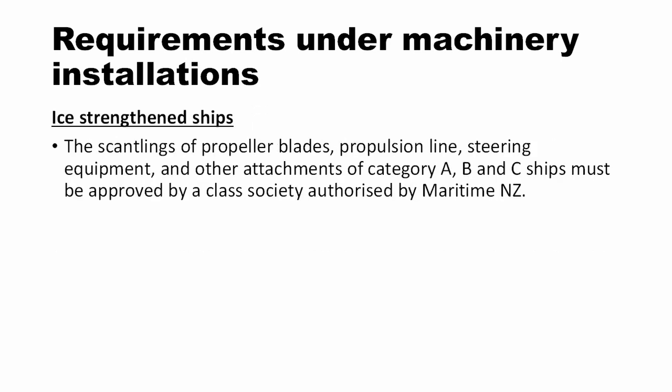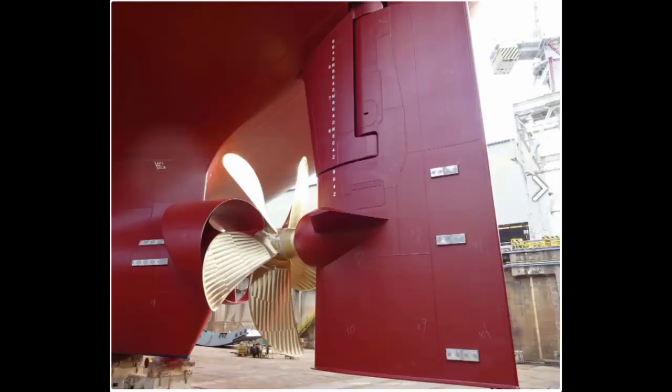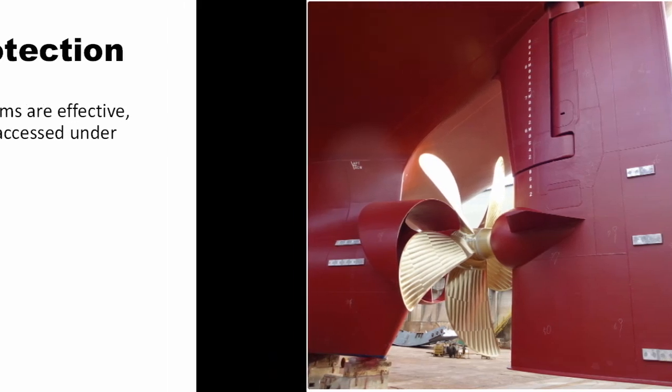In the case of ice-strengthened ships, the machinery present outside the hull is the propeller and steering gear. The propeller and steering equipment must be polar class approved, especially for category A and B ships.